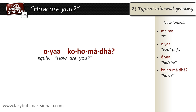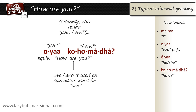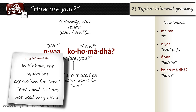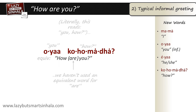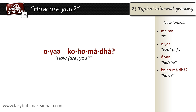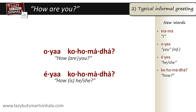As you may have noticed, this literally reads 'you how,' because we haven't used an equivalent Sinhala word for 'are.' In Sinhala, the equivalent expressions for 'are,' 'am,' and 'is' are not used very often — you'll see this once we go through a few more episodes. Moving on, if we want to ask 'how is he or she,' we would say ea kohomadha. And if we want to replace ea with a name, using Ricky as an example, we would ask Ricky kohomadha.